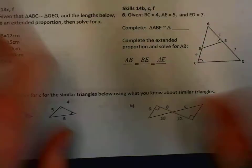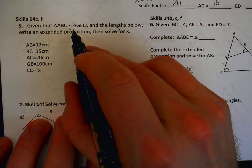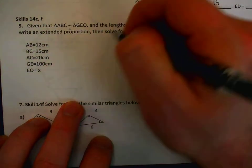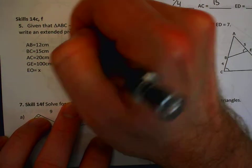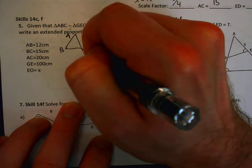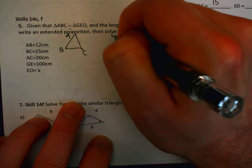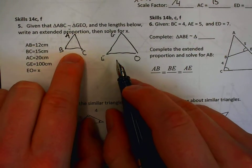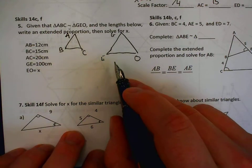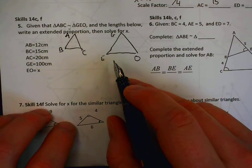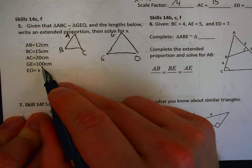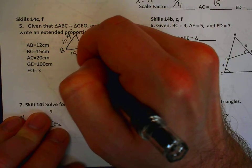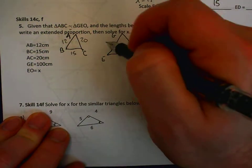Number 5. Given that triangle ABC is similar to triangle GEO, and the lengths below, write an extended proportion and then solve for x. A picture would be really helpful, so I'm just going to draw two triangles and label one ABC and the other one GEO. I don't have to draw them different sizes, but similarity means same shape, different size, so I thought it would be helpful if I did. Next, I'm going to label these with the lengths that we're given here. So we have AB is 12, BC is 15, AC is 20, and GE is 100.